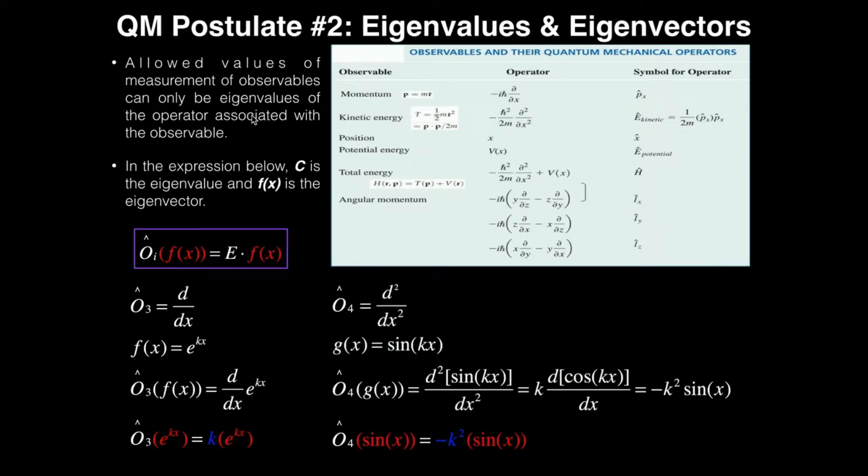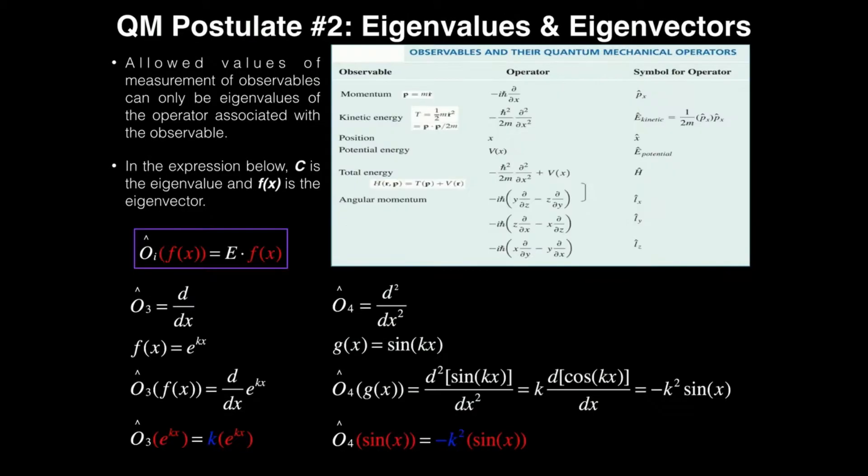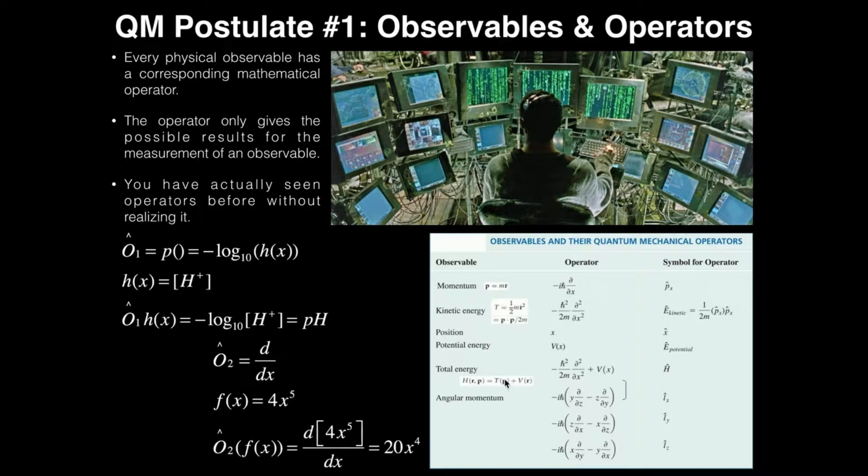The second postulate we're going to discuss is the concept of eigenvalues and eigenvectors. This has to do with what we talked about in the previous video, which was observables and operators. But eigenvalues and eigenvectors is a lot more of a mathematical concept than it really is a physical concept.